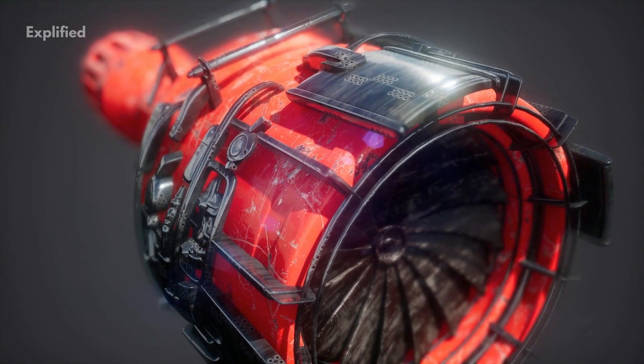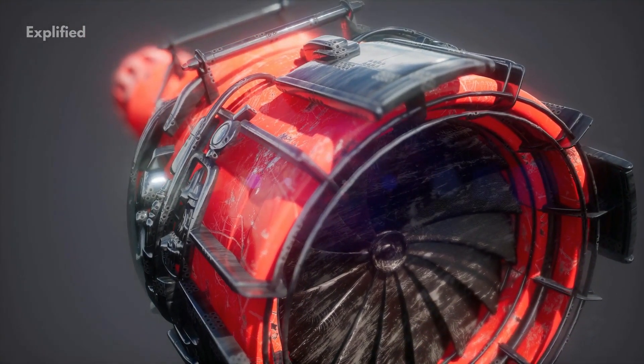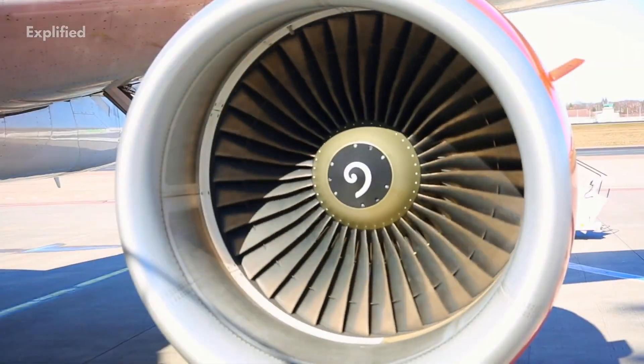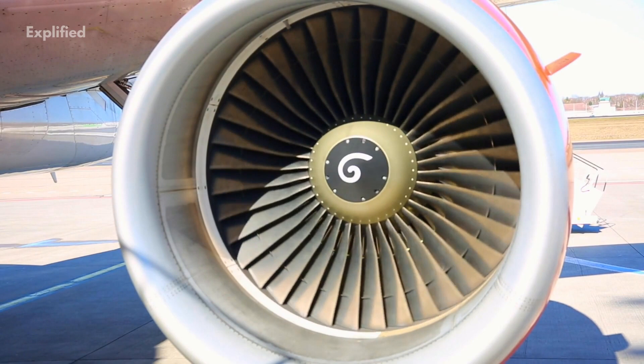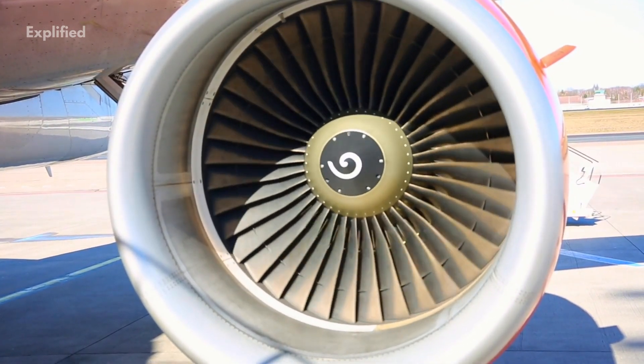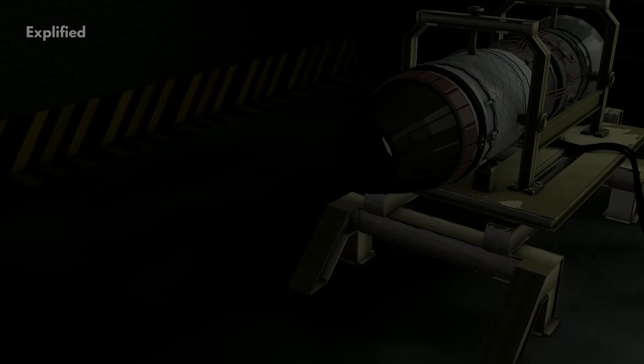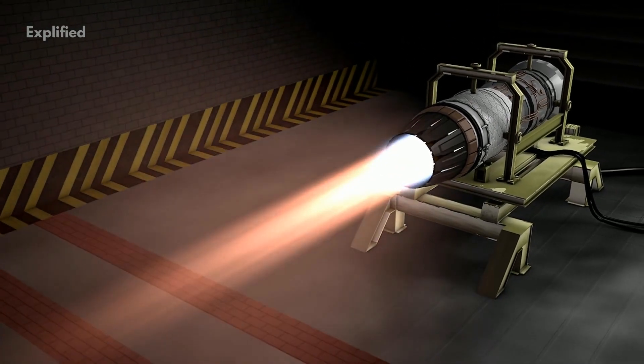The turbine section of the jet engine has the task of generating the required output shaft power to drive the propeller of the airplane. Additionally, it needs to provide the energy to run the compressor and all engine accessories. It does this by creating a high temperature, pressure, and velocity gas and turning the gaseous energy into mechanical energy in the form of a wave.